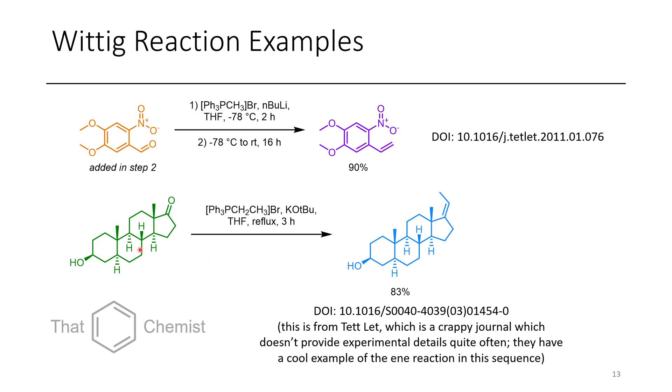Now, in this next reaction, we have this steroid derivative, which is treated with tert-butoxide and ethyl triphenylphosphonium bromide, and this just adds an ethyl group. And this is from a journal where I have issues. So Tetrahedron Letters is a journal where they often don't have enough experimental detail for you to reproduce stuff. They often don't even have NMRs, or even peak-by-peak of NMRs. And so I quite dislike Tet Letters most of the time. However, they did have an interesting reaction subsequently where they do an ene reaction with formaldehyde, and they get a cool alkene migration. And if you've never seen the ene reaction, it's kind of a cool reaction to check out.